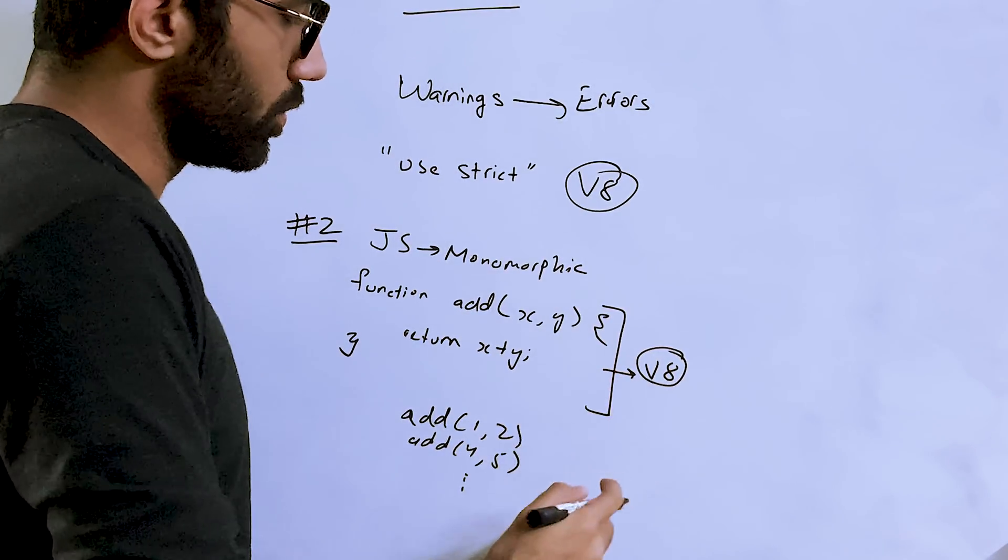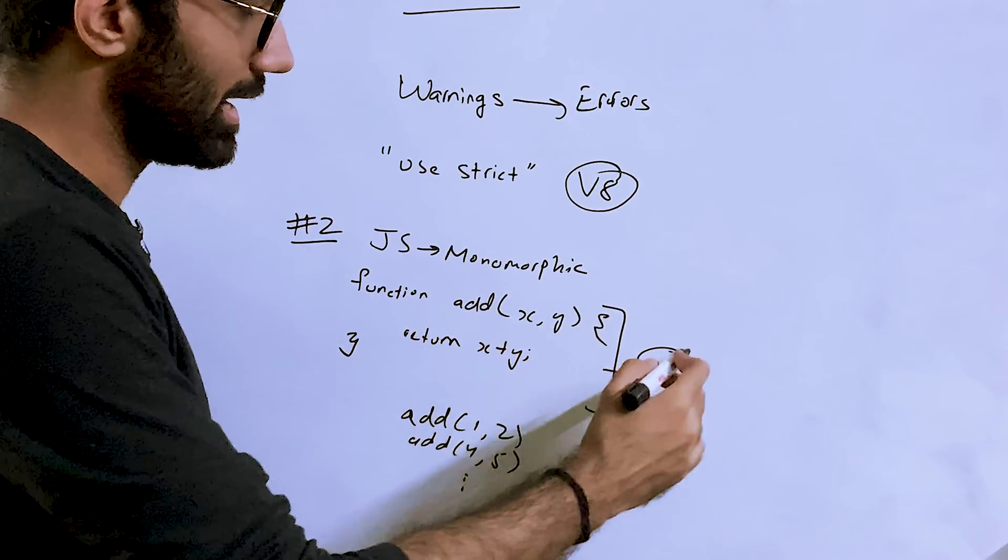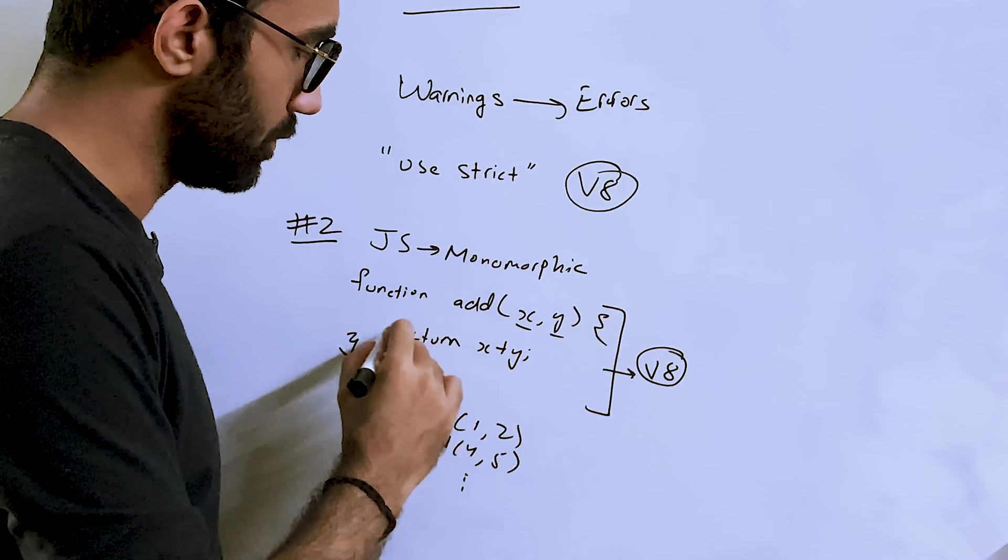The way V8 works is, for example, initially when you're writing this code, what V8 would do in the machine language, the machine code itself, is that it will say that we have an argument x, we have an argument y, and then we need to call this function in JavaScript world to get the result.